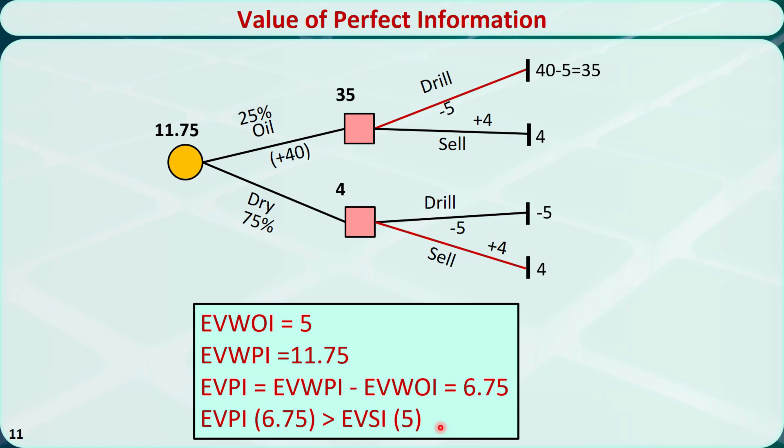The expected value with original information is still 5. The expected value of perfect information is 11.75 − 5 = 6.75, which is greater than the expected value of sample information of 5. In this video, I talked about decision trees, the expected value of sample information, and the expected value of perfect information.